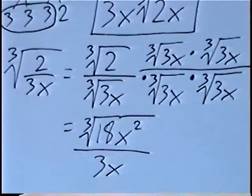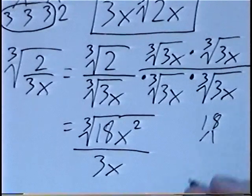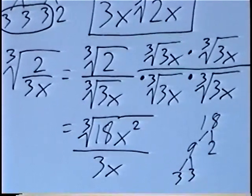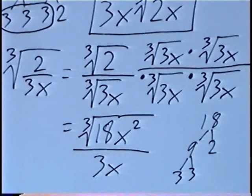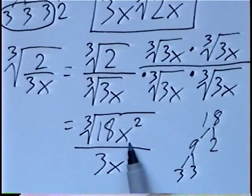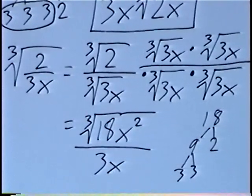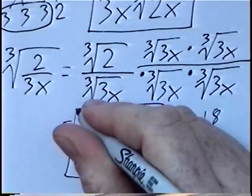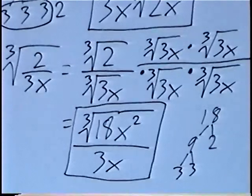We can check if 18 factors further. Factoring 18: 9 times 2, and 9 is 3 times 3. However, for the cube root there are no sets of 3, so we cannot simplify 18. X squared is only 2 x's, so we do not have 3 x's to simplify. Our final answer is the cube root of 18x squared, all over 3x.